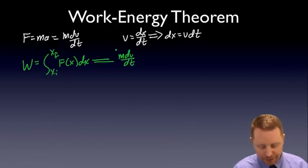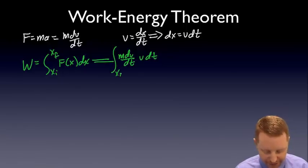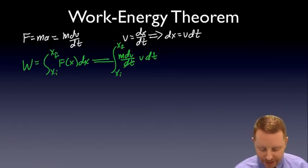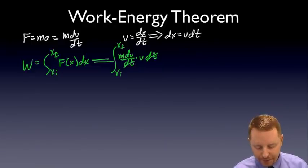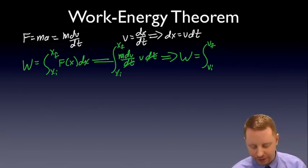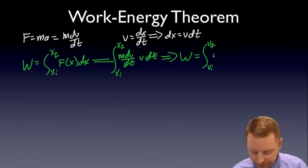That's going to be equal to, well, I'm going to replace f of x with m dv dt. And I'm going to replace dx with v dt. So that's the integral from x initial to x final of m dv dt times v dt. My dt's make a ratio of one. And what I've really done is I've changed my variable of integration. So I'm going to rewrite this as work equals the integral from v initial to v final corresponding to the velocity at x initial and x final of m v dv.